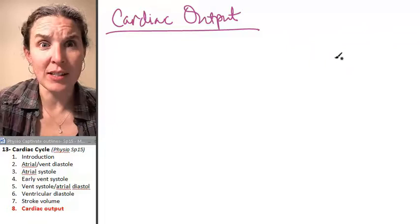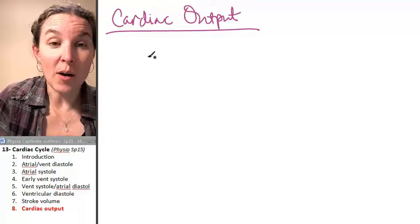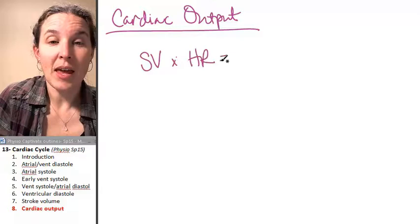Cardiac output of your heart is stroke volume times heart rate. And that's going to give you a number.